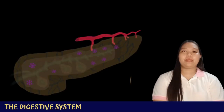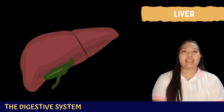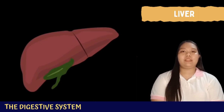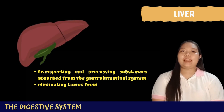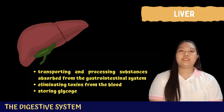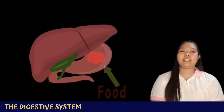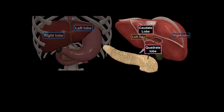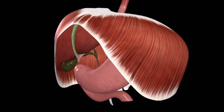The liver is a dark reddish-brown organ known as the largest internal organ and gland in the body. Its key functions include transporting and processing substances absorbed from the gastrointestinal system, eliminating toxins from the blood, storing glycogen, and secreting bile — a yellow-brown or green fluid that helps emulsify fat. The liver has four lobes: the right lobe, left lobe, quadrate lobe, and caudate lobe. It also has two types of ligaments: the falciform ligament and the round ligament.